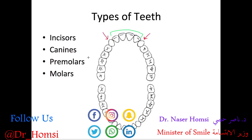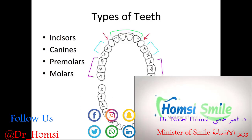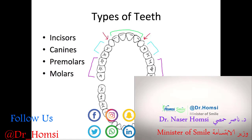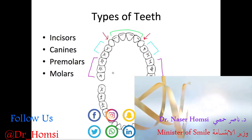The premolars are the next two teeth back from the canines, useful for tearing, holding, and grinding food. Finally, the back three teeth are referred to as the molars — the first, second, and third molars — and the third molars are usually referred to as the wisdom teeth. The premolars and molars combined are referred to as the posterior teeth because they're located in the back.